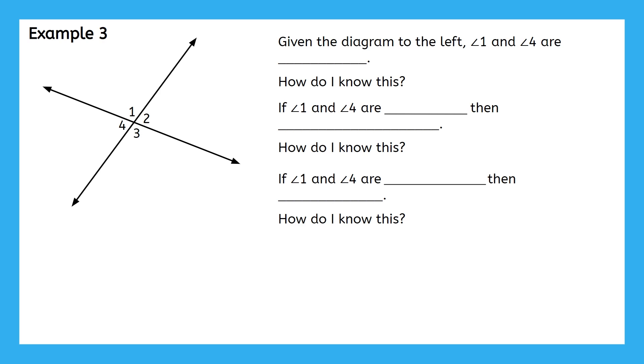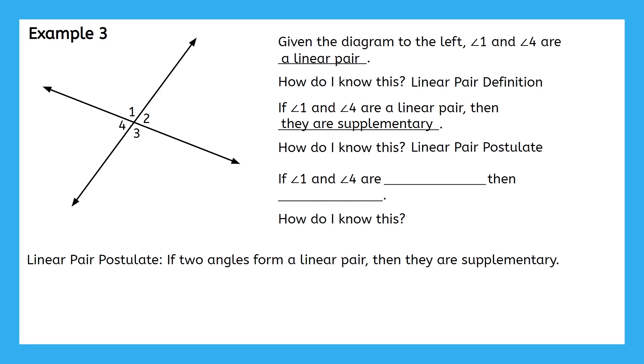Were you able to identify that angles 1 and 4 are a linear pair? We know this because of the linear pair definition, which helps us identify them from the diagram. Once we know that angles 1 and 4 are a linear pair, we can also conclude that angles 1 and 4 must be supplementary. Which property lets us conclude this? The linear pair postulate.